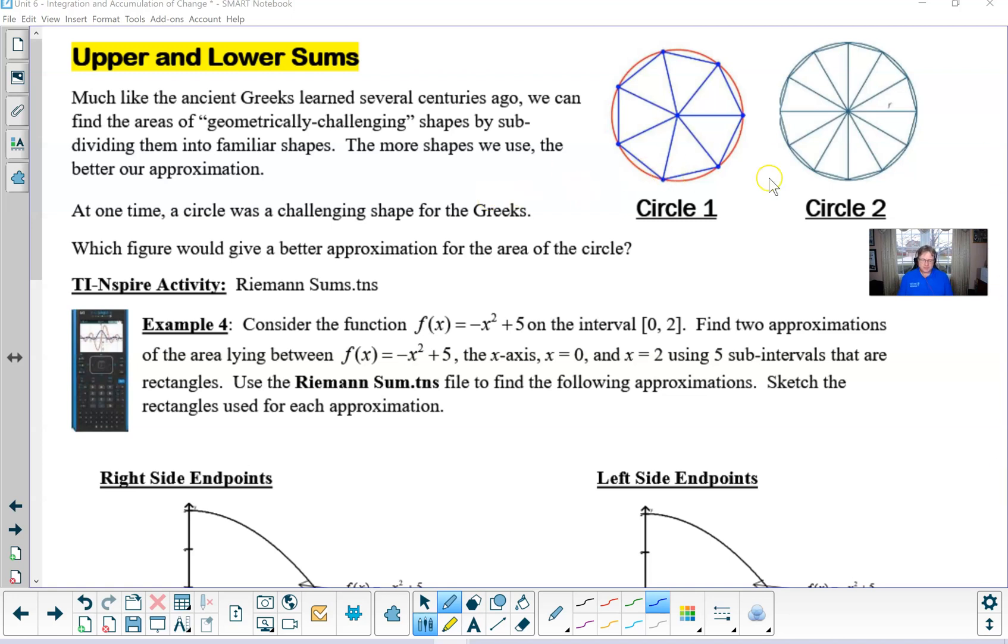So if you take a look at these two circles, I've got one of the circles divided up into six different triangles, and then I've got this other circle divided up into, let's just say many more triangles. I think there are 12.